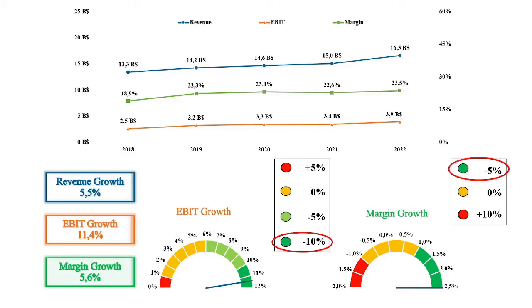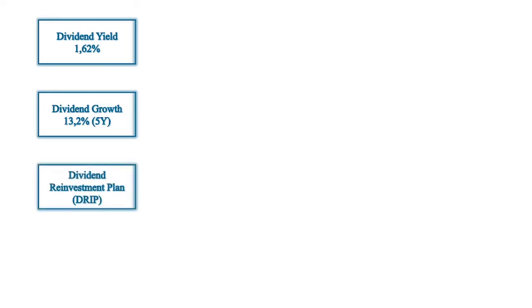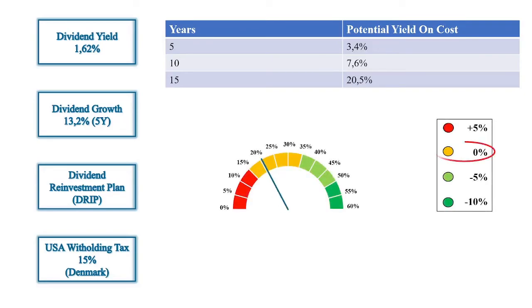When the aim of an investment is to buy and hold the stock for decades, it makes sense to relate the current dividend yield and the dividend growth by calculating the potential yield on cost. The company currently has a dividend yield of 1.62%, and the dividend growth for the last 5 years is 13.2%. To take advantage of the snowball effect, I reinvest every dividend payment, but since there is a 15% withholding tax for US stocks, I deduct 15% from every dividend payment. The potential yield on cost after 5 years would be 3.4%, after 10 years 7.6%, and after 15 years 20.5%. A potential yield on cost of 20.5% is in the yellow section of the rating scale, so the margin of safety doesn't change.